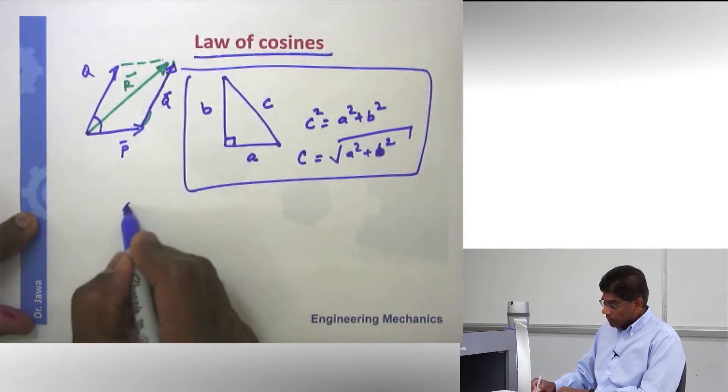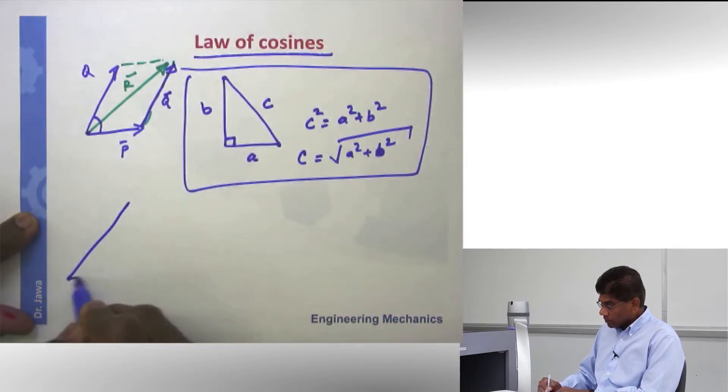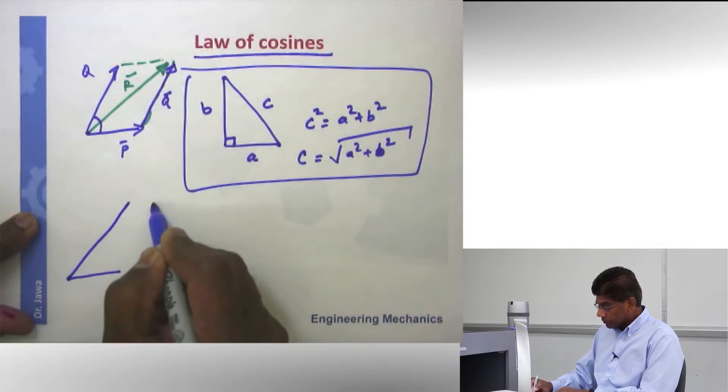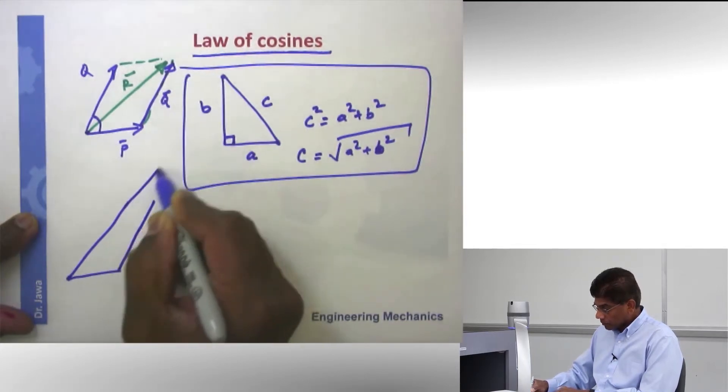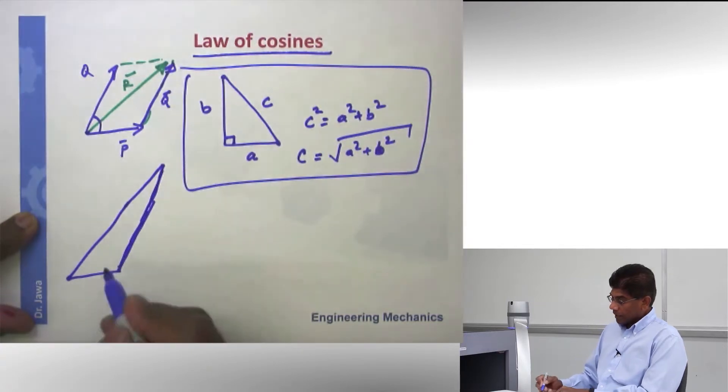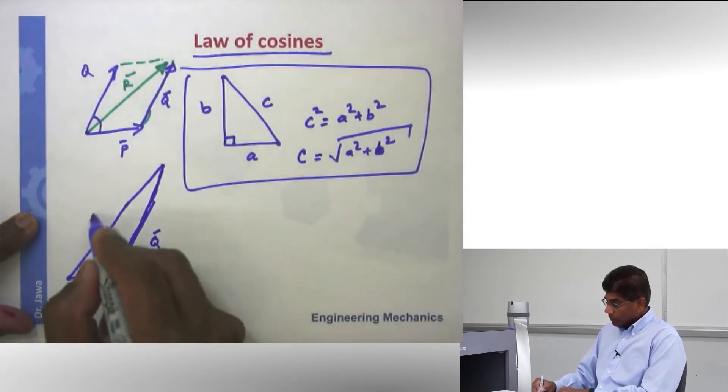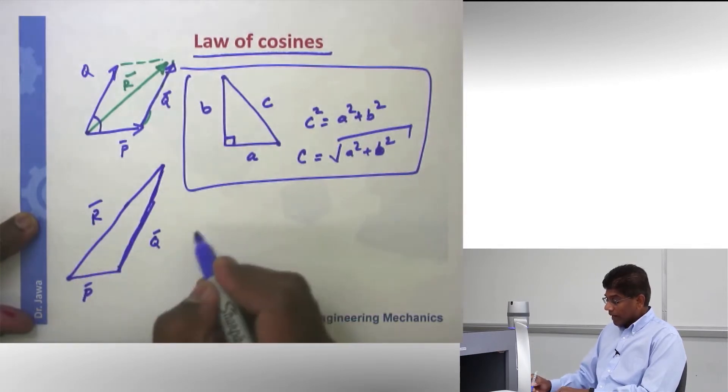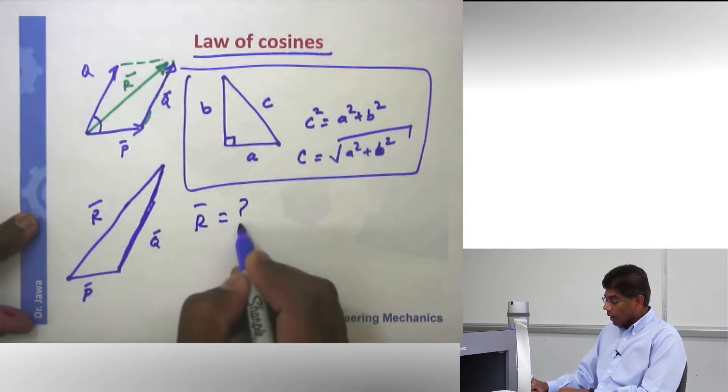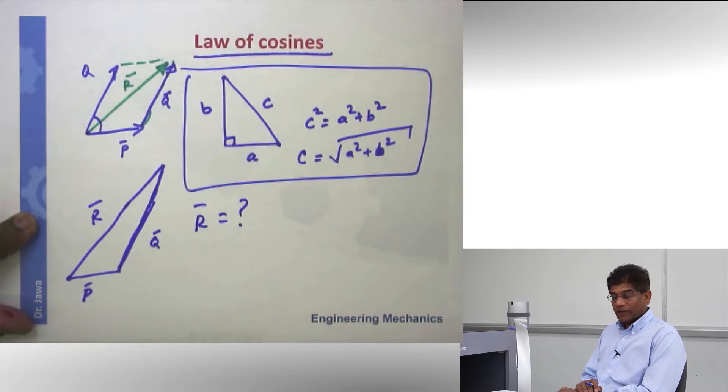I'm going to redraw the triangle. So here is the triangle we have. This is my vector P, this is my vector Q, this is my vector R. And I want to find out the vector R, but I do not want to use a graphical approach.